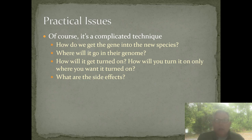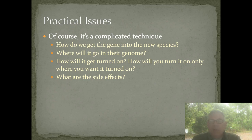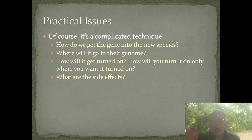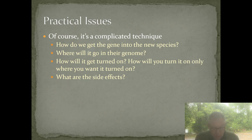There are lots of practical issues here - it's not something you can just put in a test tube and shake up. It's a complicated technique that geneticists need to go to university and work in a research lab to do. But it's also not uncommon at all. In fact, this is probably the biggest, fastest growing area in biology right now. Questions like how do you get the gene into the new species, where does it go in their genome, how do you turn this new gene on only when you want it, and are there side effects - these are all practical considerations. But at its basis, it's simple because every living thing uses this code universally.